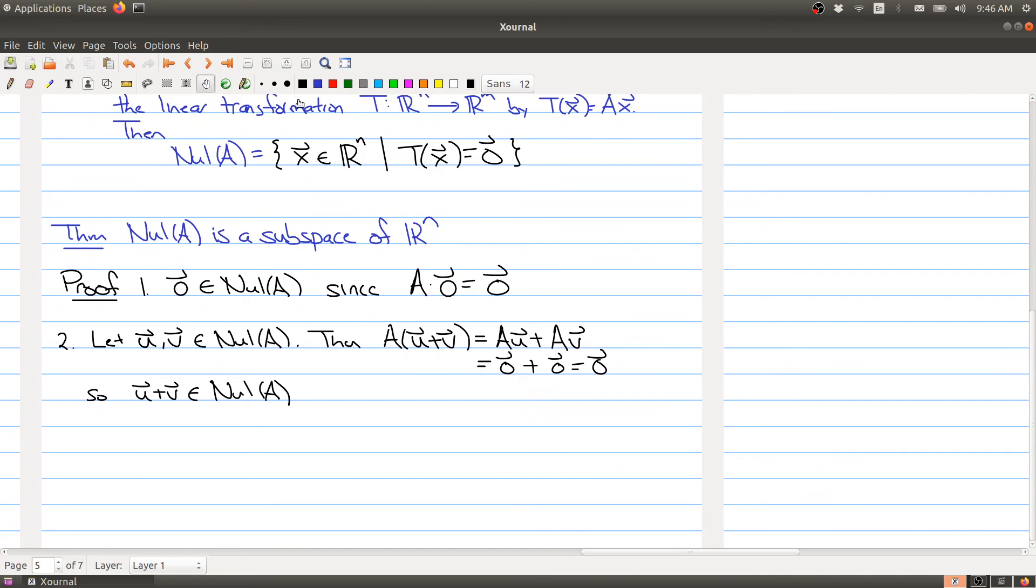The proof about the scalar multiplication is almost the same. Let's say I take a vector in my null space and some constant or scalar c. Then I'm interested in knowing what happens when I take the scalar multiple of U and multiply it by A.